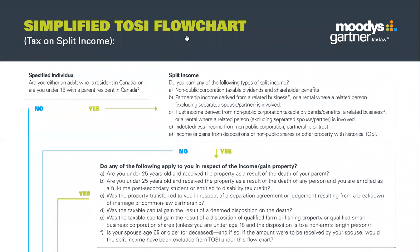The first question is pretty easy in most cases. Are you an adult who is resident in Canada, or are you under 18 with a parent resident in Canada? Yes, this is true. Split income: do you earn any of the following types of split income? We can start off with A here — a non-public corporation, that's our auto dealership. Taxable dividends and shareholder benefits. We're concerned with taxable dividends here. That applies. The others would all basically come down to the same thing: can we trace this back to a small business resident in Canada?